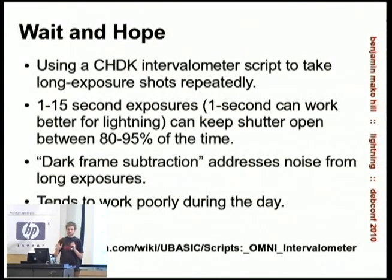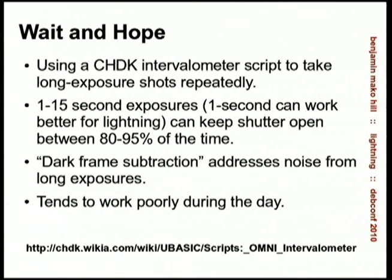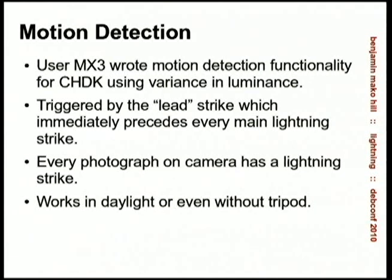The wait-and-hope method uses an intervalometer — taking pictures repeatedly. By taking long exposures with a reasonably fast SD card, we can have one-second or even two- to three-second exposures. We can have the shutter open between 80 and 95 percent of the time. You have this problem that with very long exposures and cheap cameras you end up with a lot of noise, so there's a method called dark frame subtraction. All this happens automatically using CHDK. The new method is motion detection using variance in luminance on the camera sensor to detect lightning strikes.